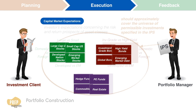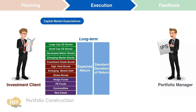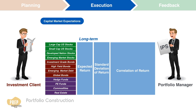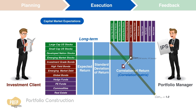Once the universe of asset classes has been specified, you as the portfolio manager will collect data on long-term expected returns, standard deviation of returns, and correlations of returns with those of other asset classes. The correlation of returns is stated in the form of a correlation matrix, where each cell represents the correlation of one asset to the other. The diagonal of the matrix should all be one, as the correlation of each asset with itself is one, and the matrix is symmetrical along this diagonal.